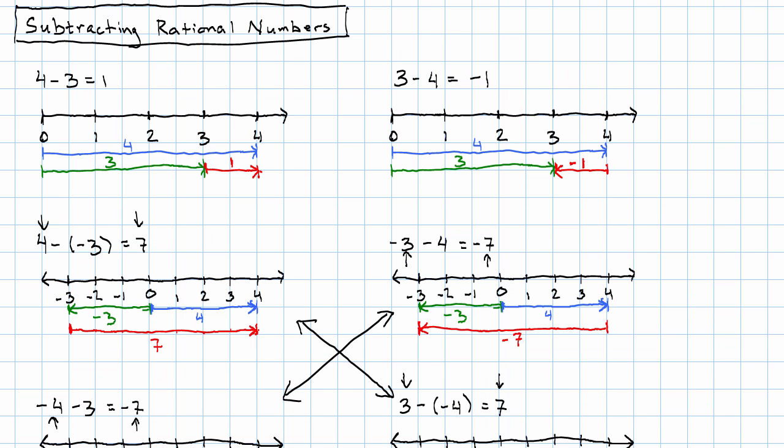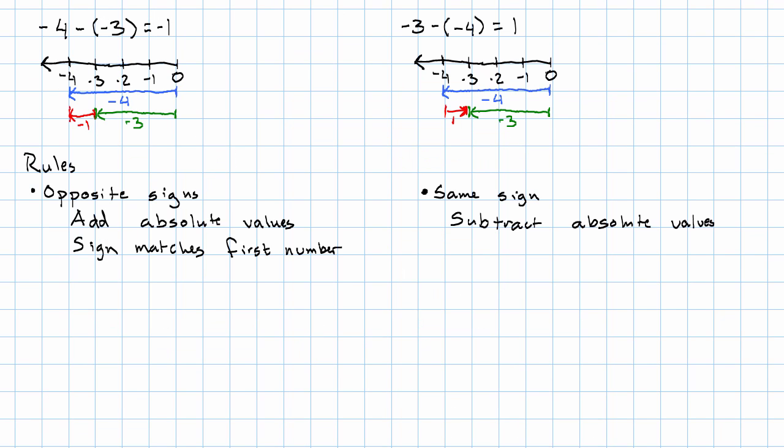With positive numbers, bigger minus smaller is positive. With negative numbers, bigger minus smaller is negative.